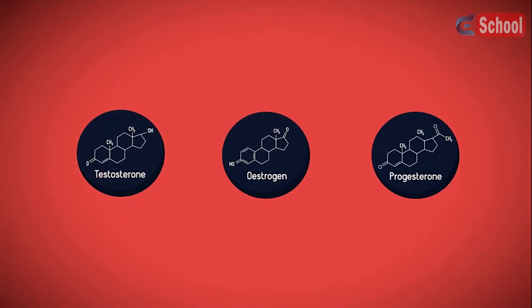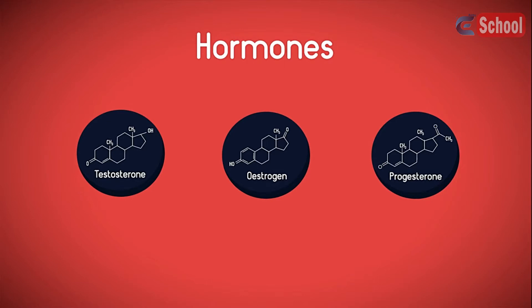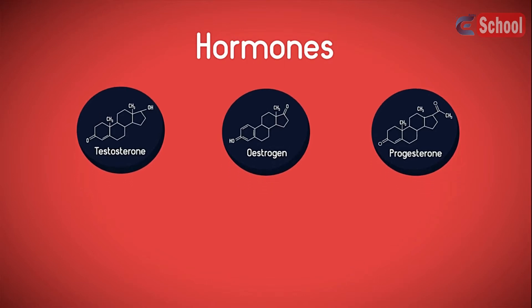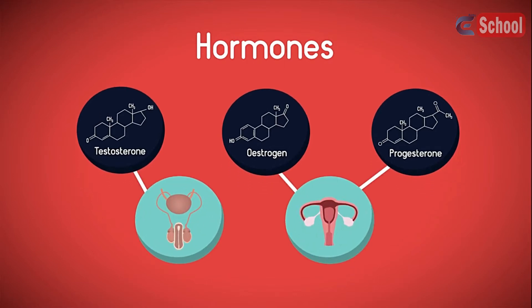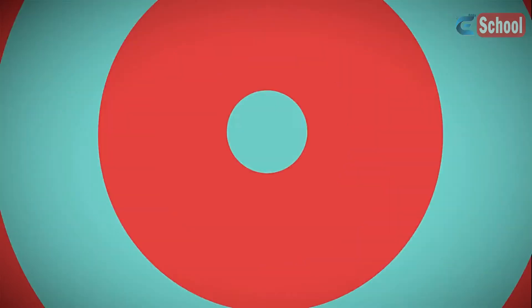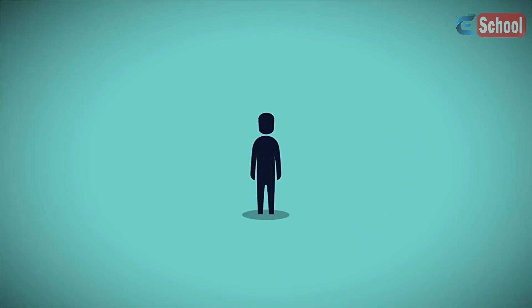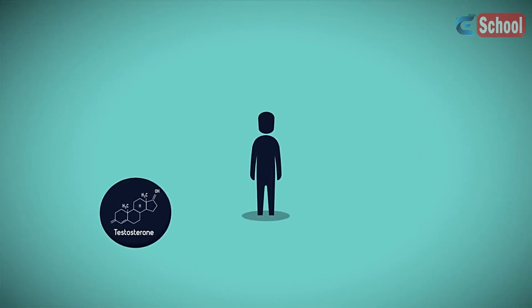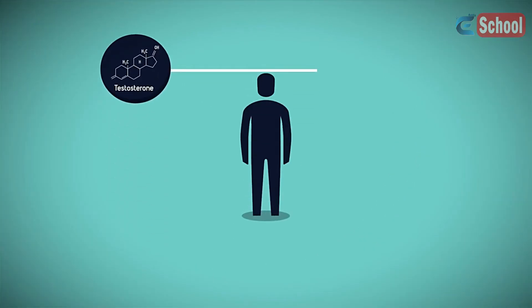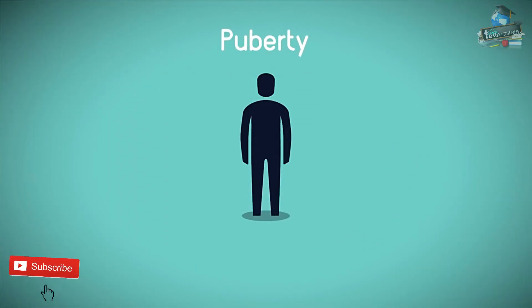Testosterone, oestrogen and progesterone. Hormones, as you have learned in a previous lesson, are chemical messengers secreted by glands and have specific target organs. In this lesson you will learn about hormones that stimulate changes to your body during puberty.